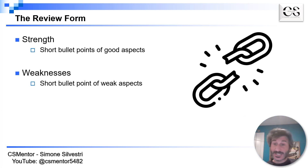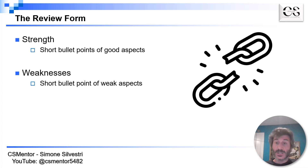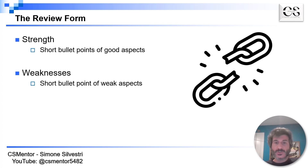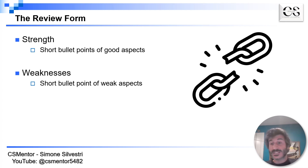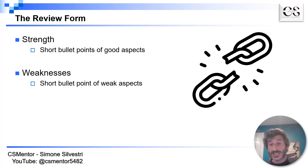The second part of the review form generally requires you to summarize, similarly to the previous block, what are the weaknesses of the paper. Again in bullet points and short sentences you should summarize what you didn't like about the paper — what you would have liked to have seen, what should be better discussed, what was not convincing, what assumptions sound unrealistic, whether the experiments have been complete or not, etc.